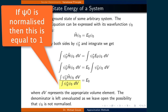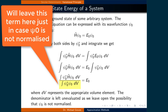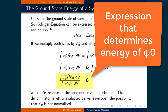If psi0 is normalized, then the denominator equals 1. However, we will keep the denominator unevaluated to leave open the possibility that psi0 is not normalized. The important thing to note is that we have an expression which determines the energy of a quantum system described by psi0.